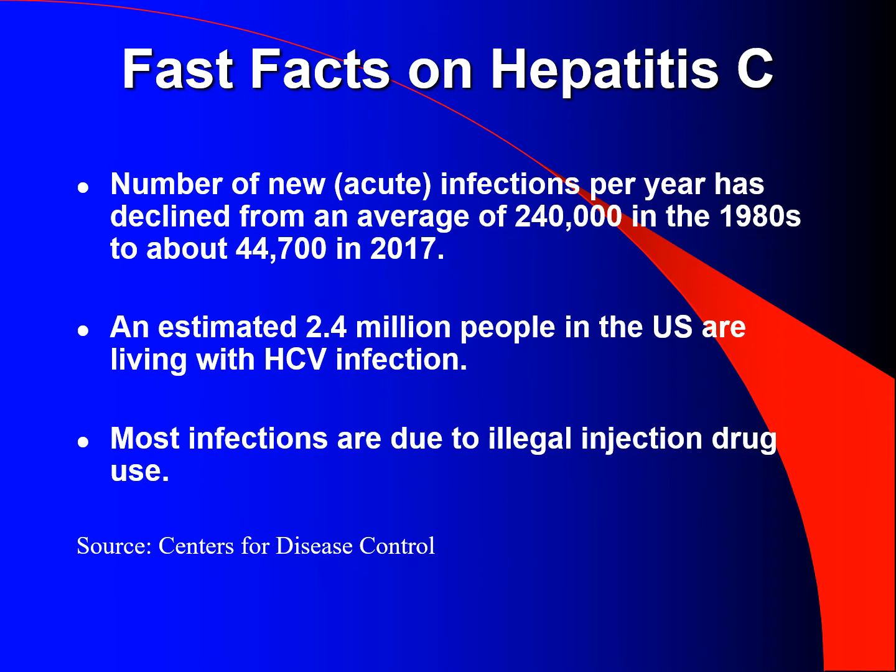Fast facts on hepatitis C: the number of new acute infections per year has declined from an average of 240,000 in the 1980s to about 44,700 in 2017. An estimated 2.4 million people in the U.S. are living with hepatitis C infection. Most infections are due to illegal injection drug use.